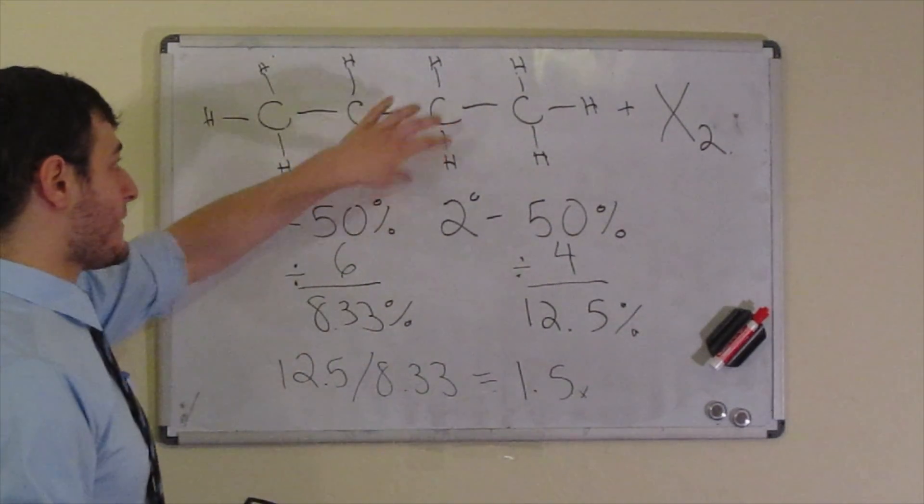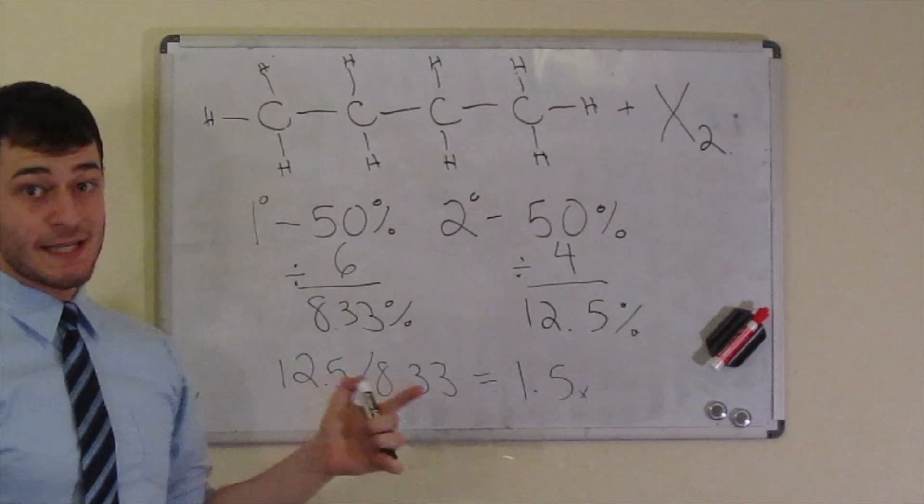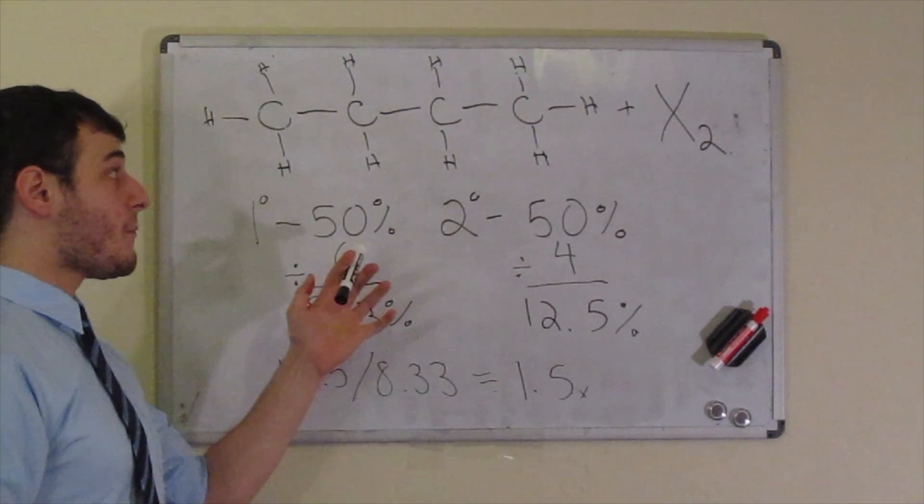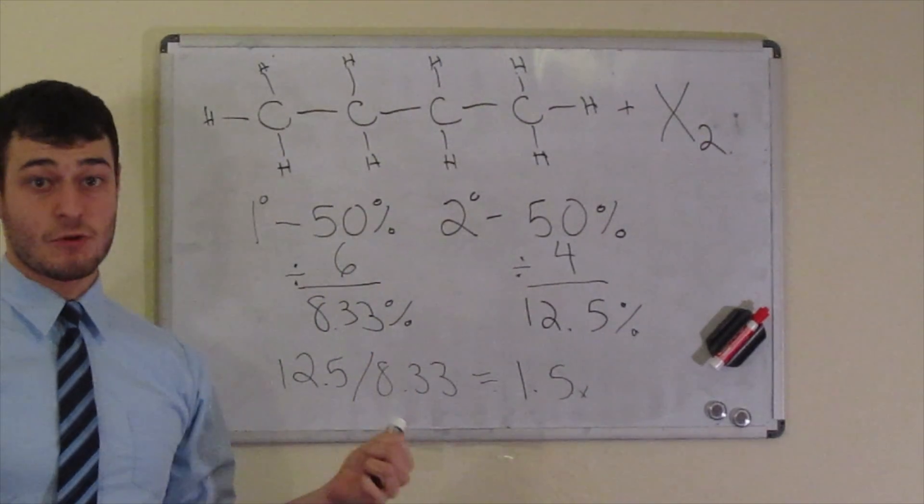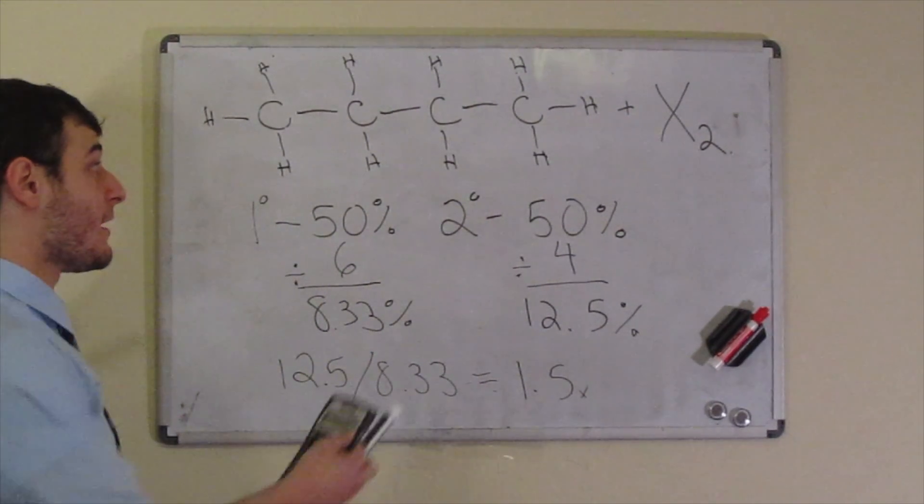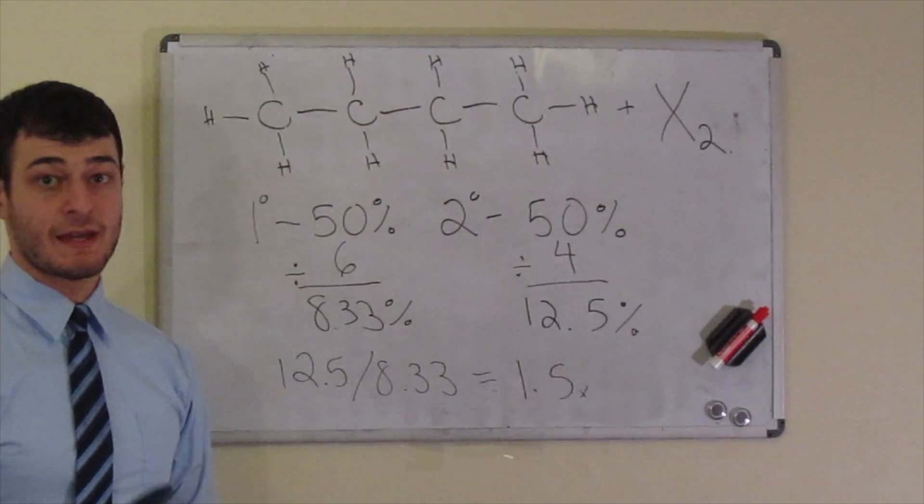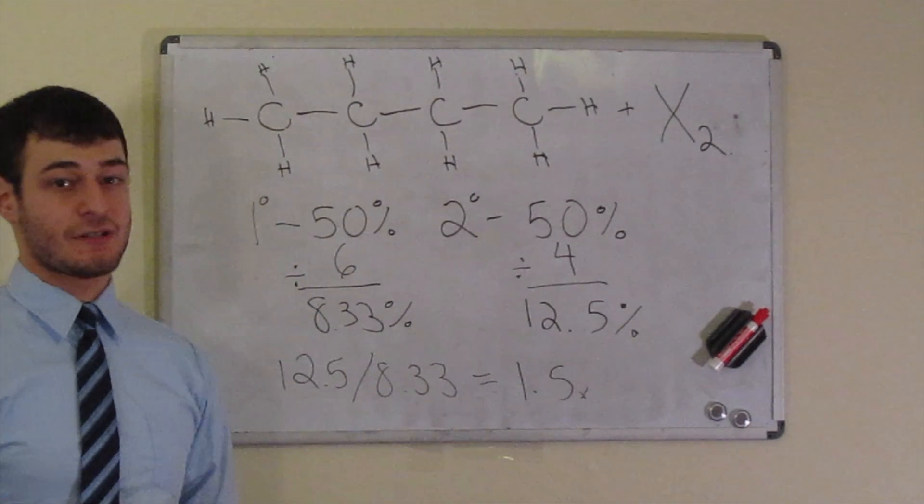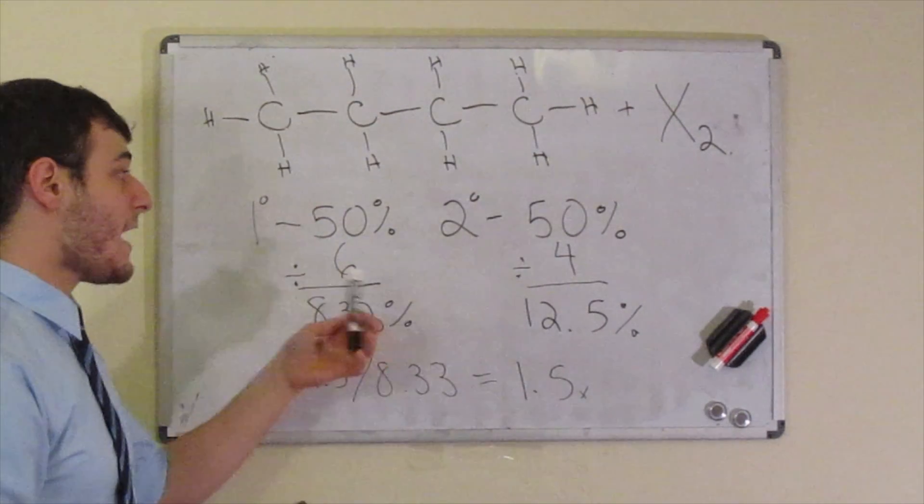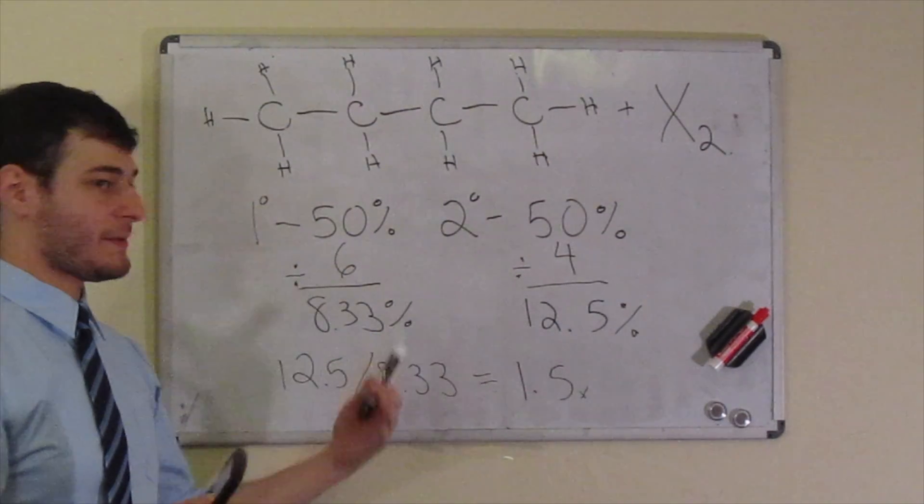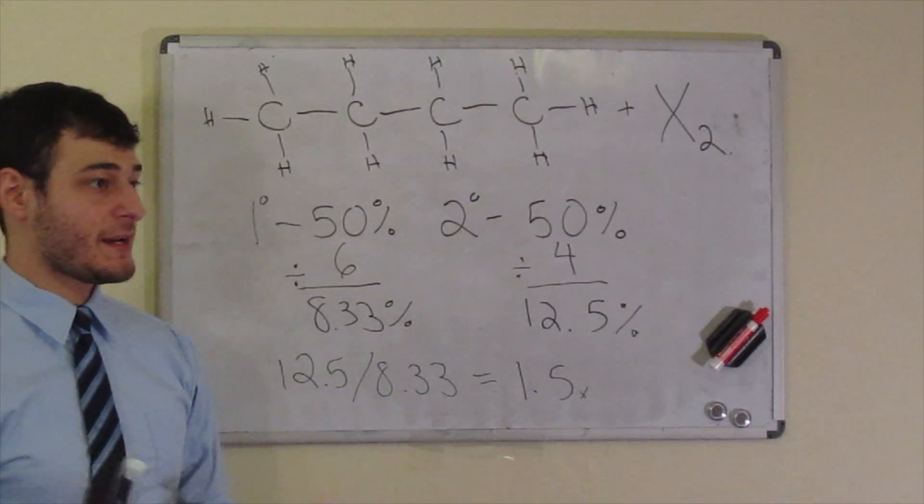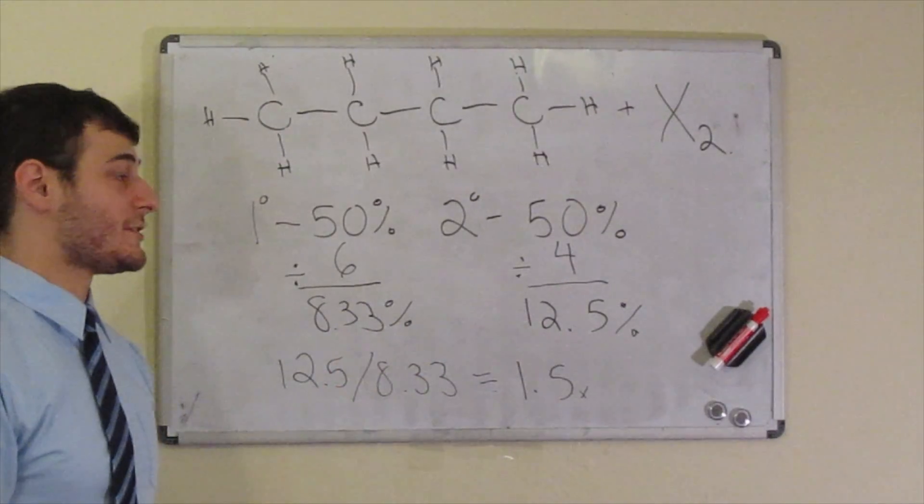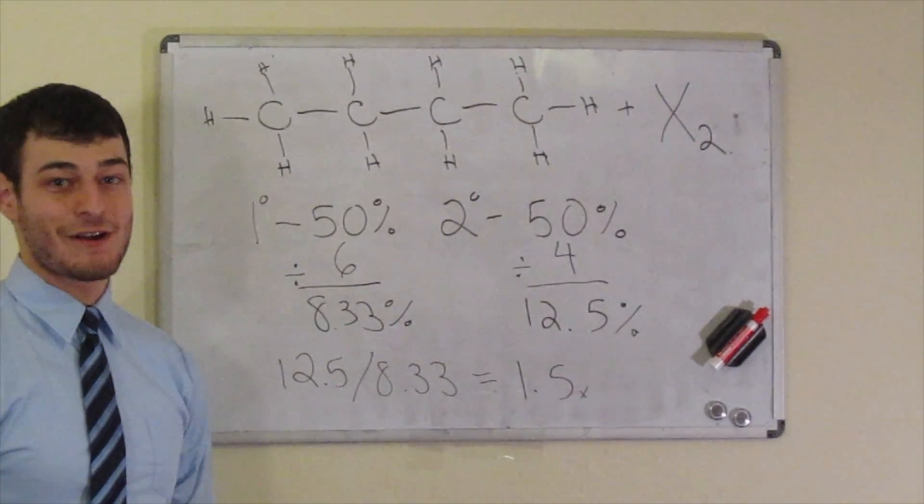The idea that secondary hydrogens are more reactive is called selectivity. And as we move forward, we're going to find that the bromination compared to chlorination is more selective. You get a higher amount of secondary hydrogens reacting. And in my next video, we're going to talk about the Hammond postulate. And it's going to explain why the chlorination and the bromination are selective, and why the bromination is even more selective than the chlorination. So check that out. Alright, see you guys.